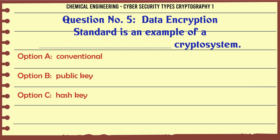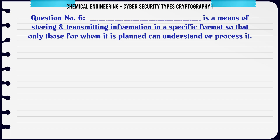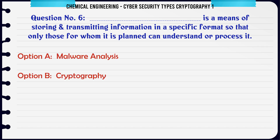The correct answer is Clear text. Data Encryption Standard (DES) is an example of which type of cryptosystem? A) Conventional, B) Public key, C) Hash key, D) Asymmetric key.